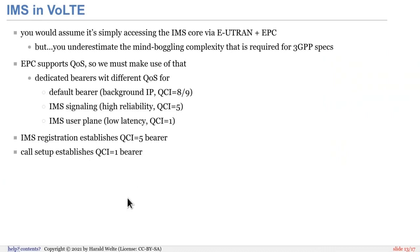When you attach to an LTE network, you always have a default bearer — your background public IP internet access — negotiated with QCI 8 or 9. If you use voice-over LTE, you will have two additional dedicated bearers. One is for IMS signaling, which has high reliability but no real latency constraints, using QCI 5. And then when you do an actual voice call, you have yet another additional dedicated bearer with low latency but possibly lossy configuration using QCI 1 for the voice-over-IP RTP frames. So when you do your IMS registration, this establishes the QCI 5 bearer, and when you do a call setup, it establishes the QCI 1 bearer.